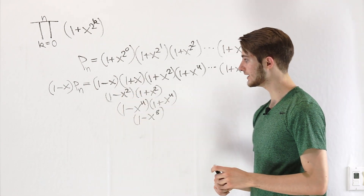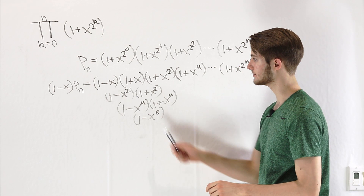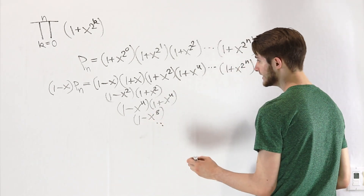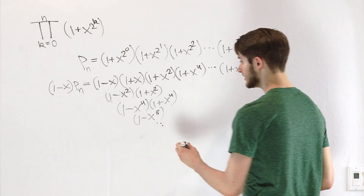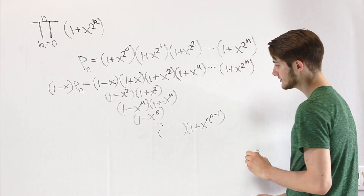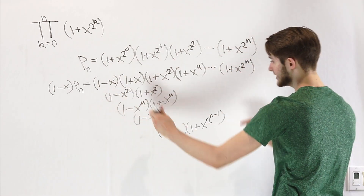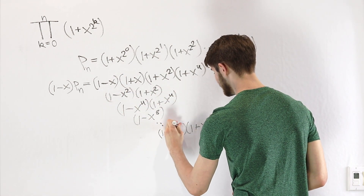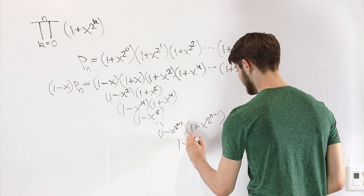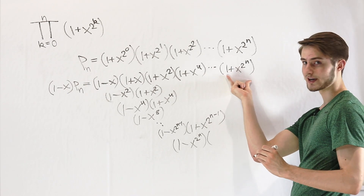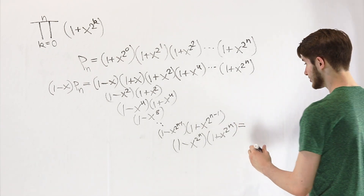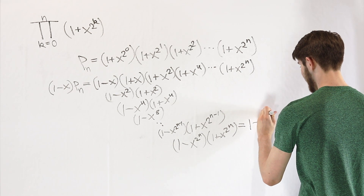Notice every time we do this difference of squares, the exponent of our x is getting multiplied by 2 — we go x, x squared, x to the fourth, x to the eighth — and that's going to keep happening until we get to the term before this last factor, which would be 1 plus x to the 2 to the n minus 1. The factor just before that, once we multiply all of this out, is going to be 1 minus x to the 2 to the n minus 1. Multiplying those two factors together — again a difference of squares — gives us 1 minus x to the 2 to the n. Then we have our final factor, 1 plus x to the 2 to the n, giving us 1 minus x to the 2 to the n plus 1.